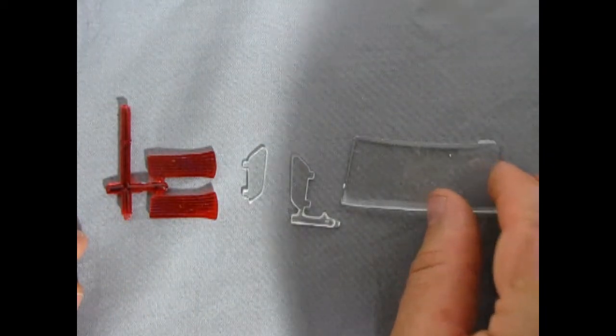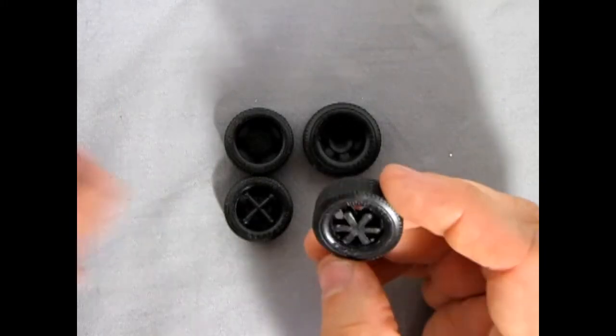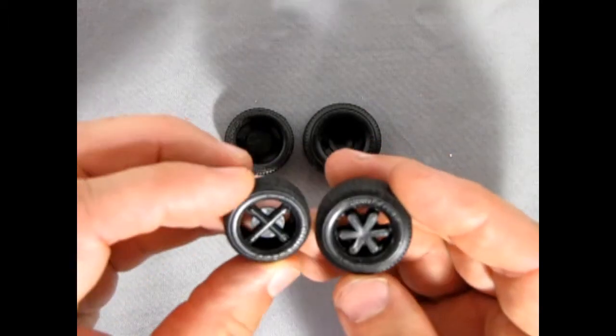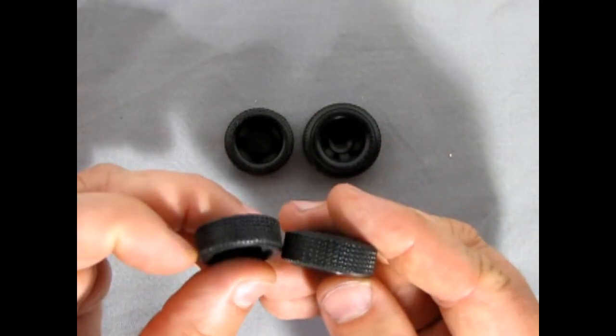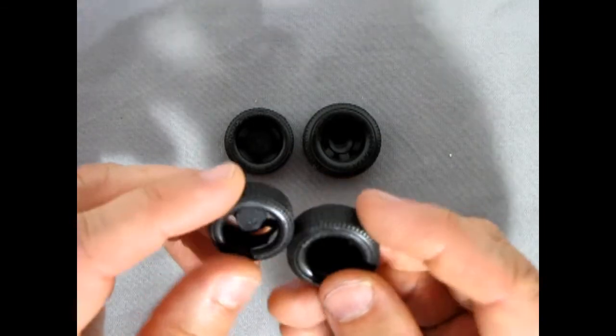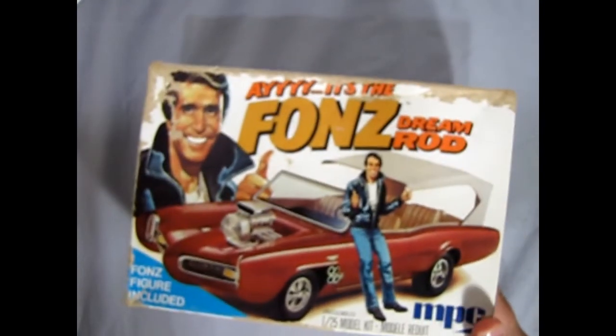Last but not least, our Fonzie dream rod rides on these Goodyear tires. There are two different sizes and of course you're going to have to cut those webs out of there, but the tread patterns match, which is very nice, and overall they're not bad tires.